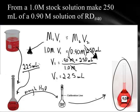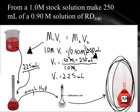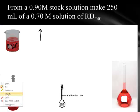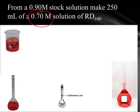Let's look at another example of this problem. What we're actually going to do is take this 0.9 molar solution and pour it into this beaker right here. This 0.90 molar solution becomes my new stock solution. In this problem, I'm starting with 0.9 molar, and I want to make — you can see it right up there — I want to make 0.7 molar.